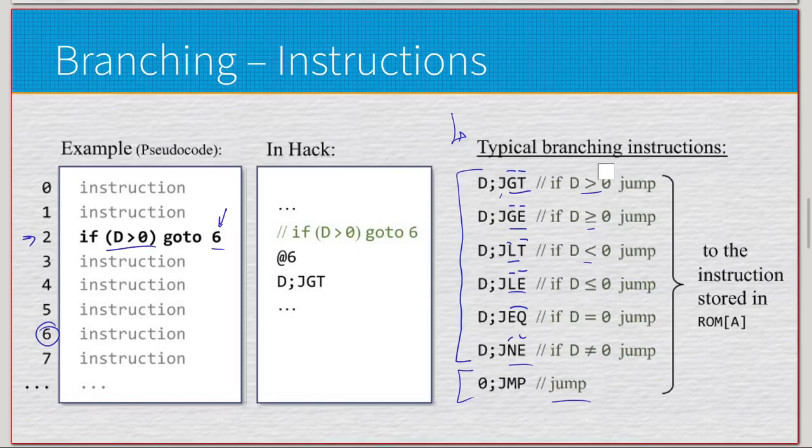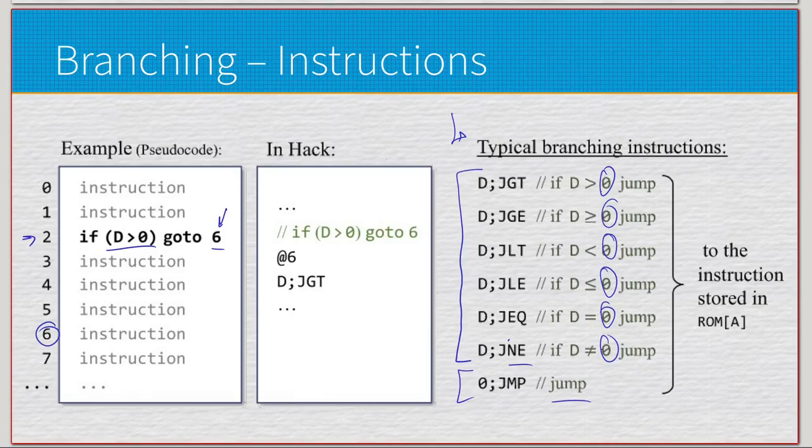This is the comparison, and every time in Hack assembly we do some form of comparison, it is always comparing against the value of zero. That will get explained in the next chapter, but for now just know we always compare against zero.